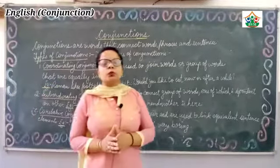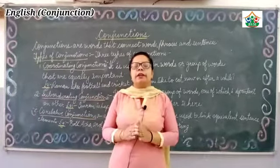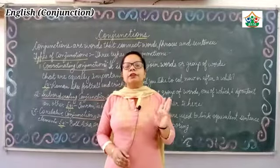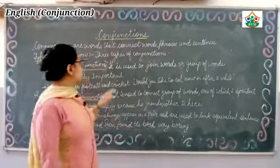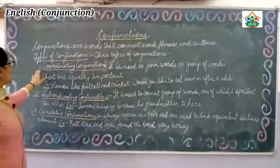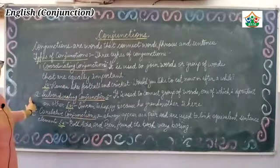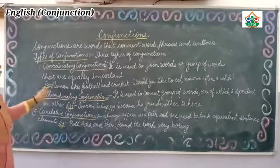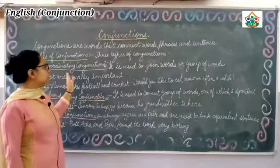So conjunctions are those words which join sentences, words or phrases. There are three types of conjunctions. Number one is coordinating conjunction, number two is subordinating conjunction, and number three is correlative conjunction.